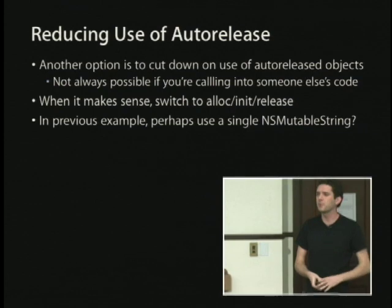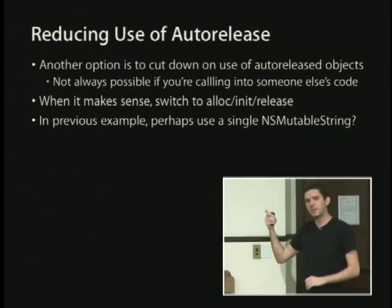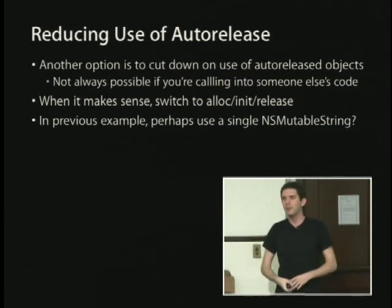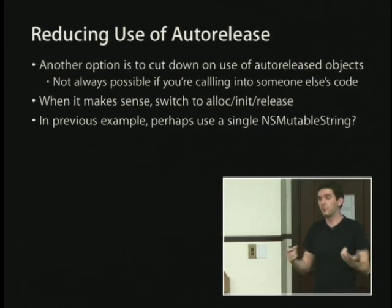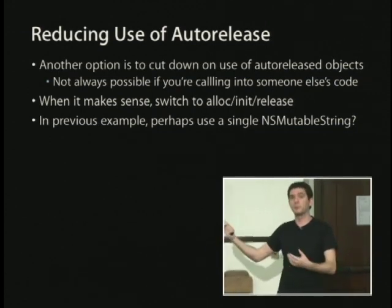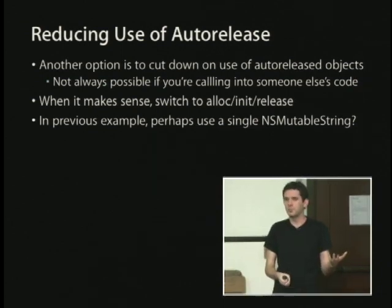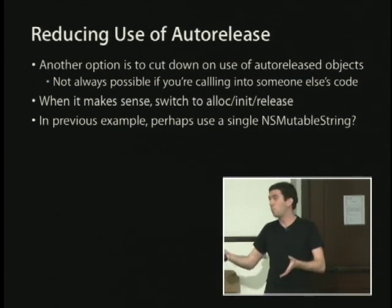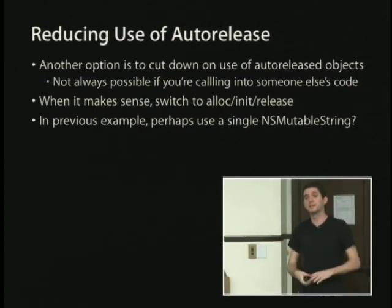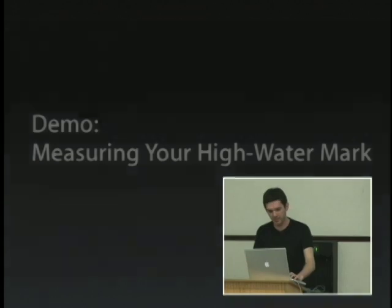When it makes sense, switch to alloc/init/release. It helps rein in your memory usage and make sure you really have control over what's going on. Another option is to use a single NSMutableString for all operations — allocInit an NSMutableString, set the string on it, lowercase its contents, and append an additional string with format. You can do all the operations you were doing with the single NSString convenience methods, but on one object — the NSMutableString — which doesn't allocate any temporary memory and start auto-releasing things, so it avoids the problem entirely.